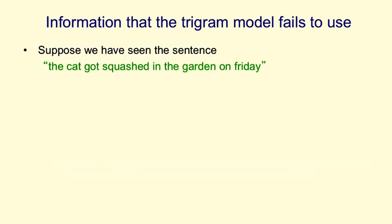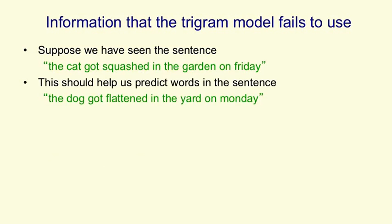Now the trigram model fails to use a lot of obvious information that will help you predict the next word. Suppose for example you have seen the sentence the cat got squashed in the yard on Friday. That should help you predict the words in the sentence the dog got flattened in the yard on Monday.